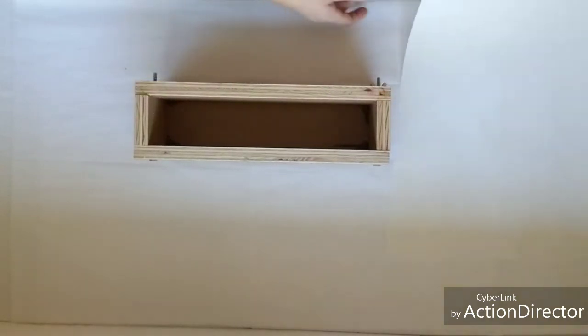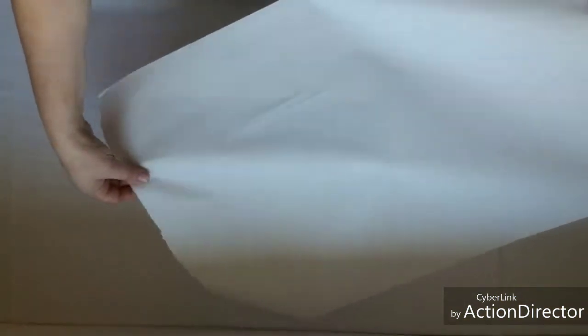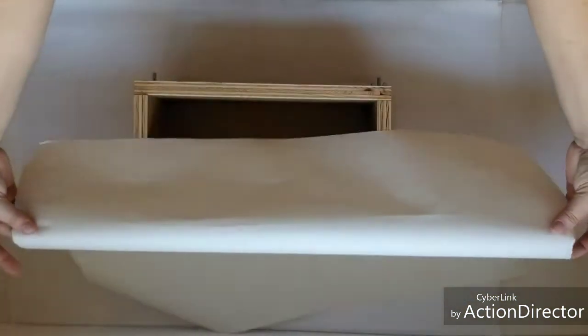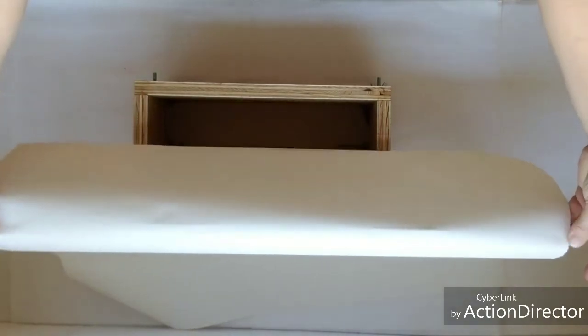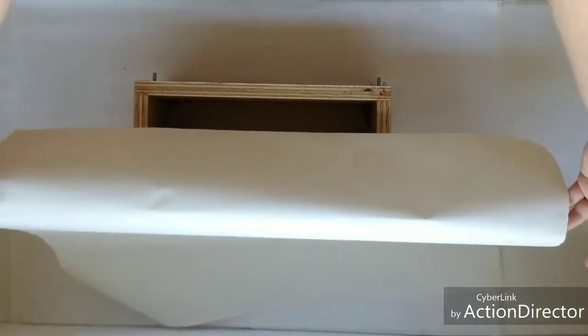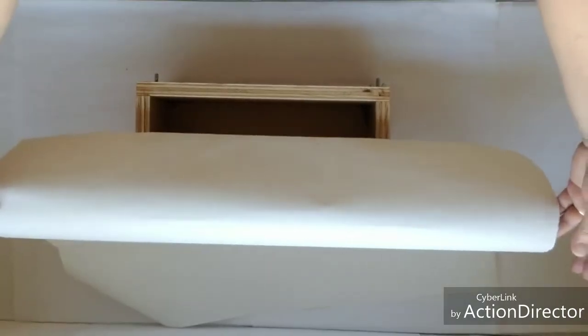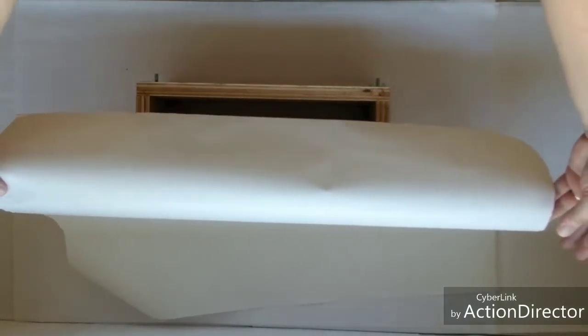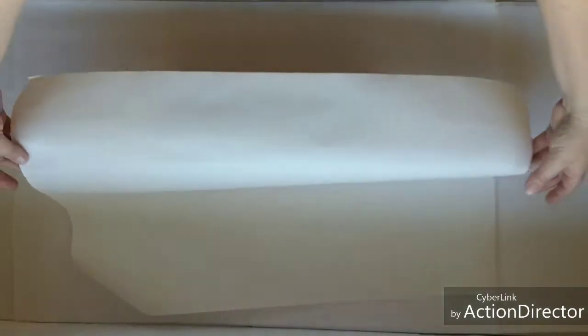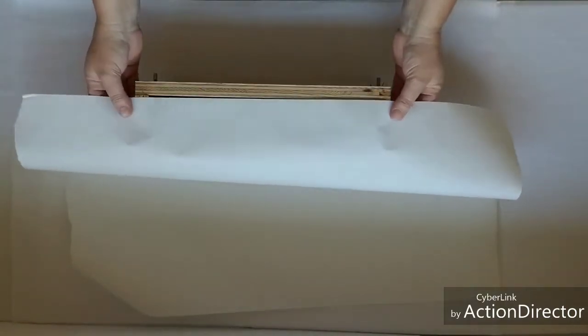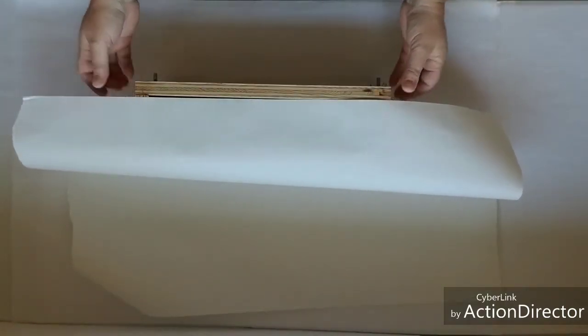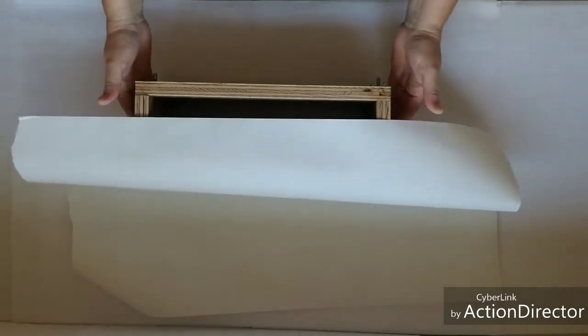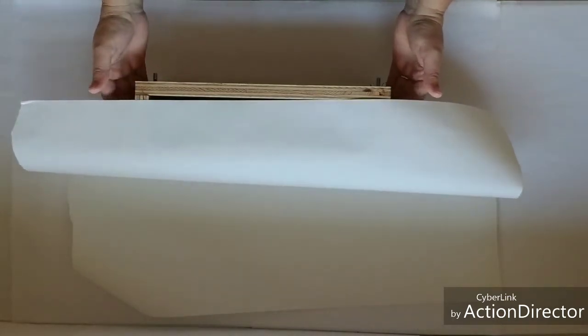So for the small one, I recommend getting a piece of freezer paper that is about twice the size of your mold. For the large mold, probably about one and a half times the size. You need to have enough coming up the size of your mold to line the sides.